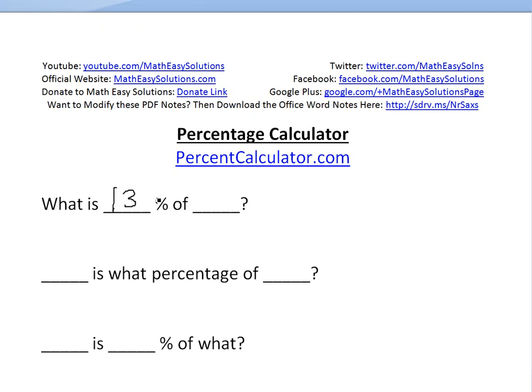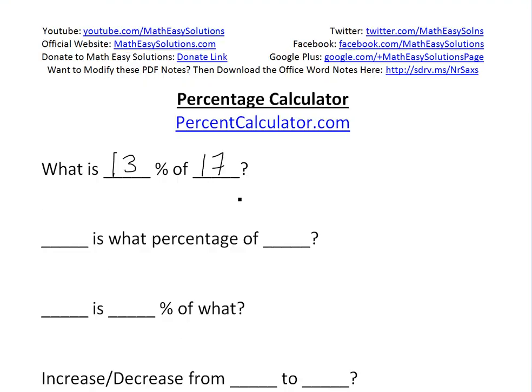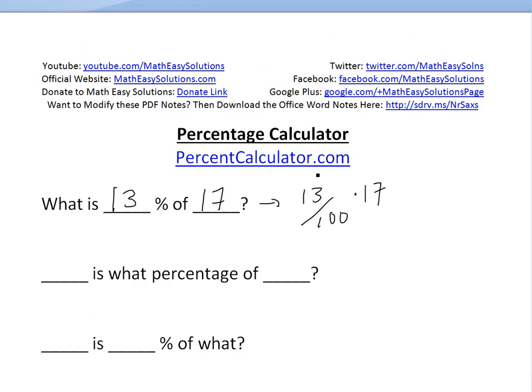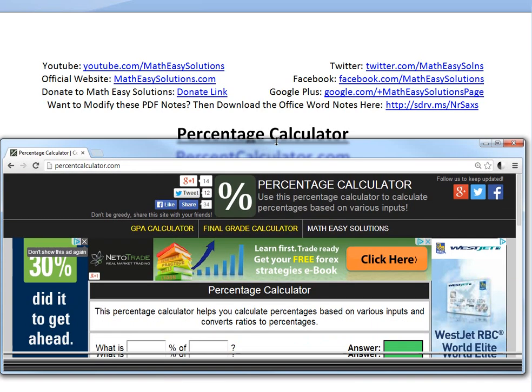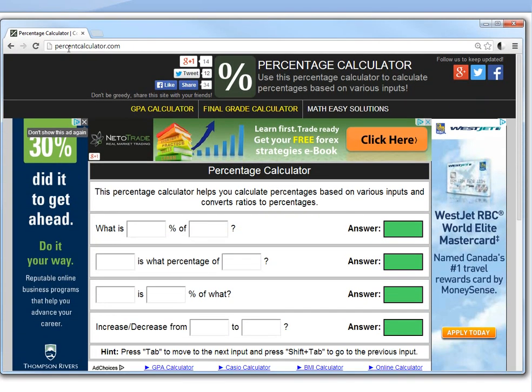For example, if you want to find 13% of 17, with a regular calculator you would have to go 13 over 100 times it by 17 and plug that in. Or you could just use my percent calculator. Here's the calculator at percentcalculator.com. You just type it in.